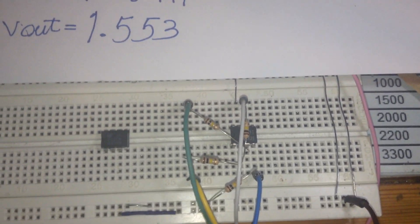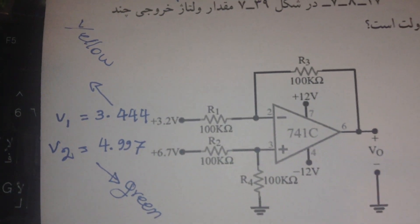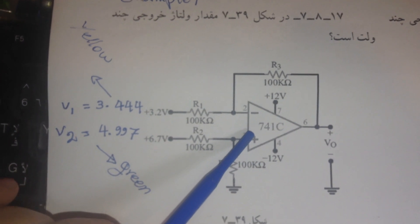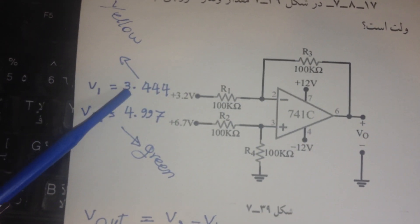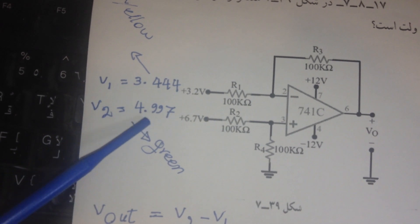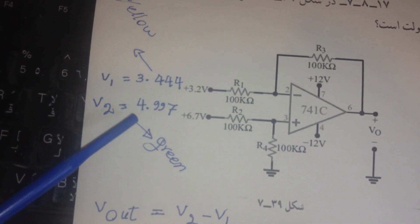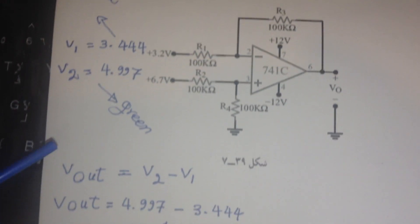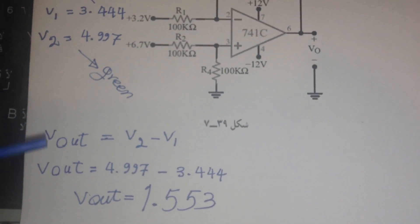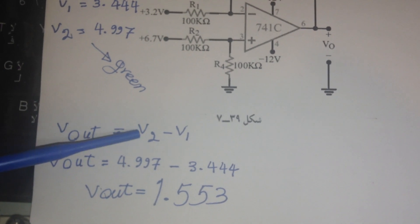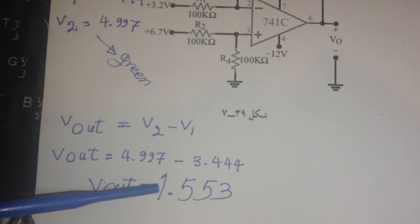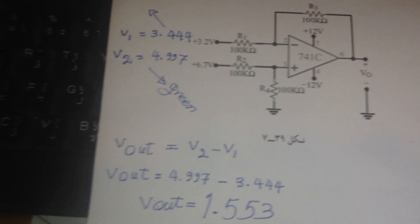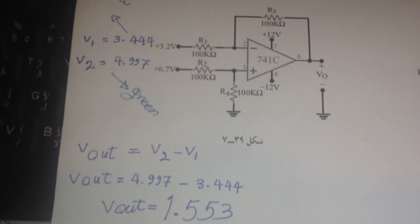As you can see, the inverting and non-inverting inputs of the UA 741 are connected to 3.4 volts and 4.9 volts—actually 5 volts and 3.3 volts. The output is V2 minus V1, and finally the output is 1.553 as you can see.